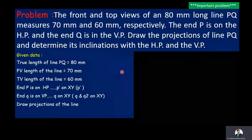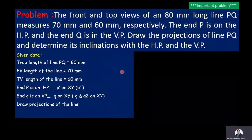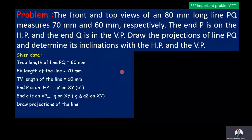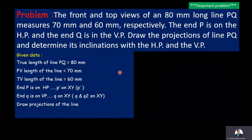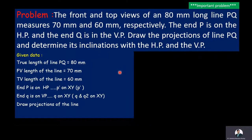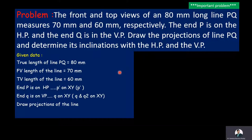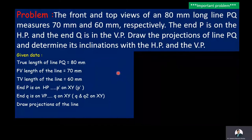We need to find the values of theta and phi. Theta is the inclination of the line with the HP, and phi is the inclination of the line with the VP. Here, 'line' means the true length of the line.